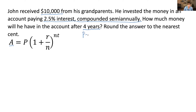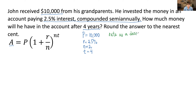Let's list what we are given. The principal P equals ten thousand dollars. The interest rate is 2.5 percent. N, the number of times the interest is compounded per year, equals two. Time t equals four years. We have to be careful because the interest rate needs to be written as a decimal. To convert 2.5 percent to a decimal, we divide 2.5 by 100 to get 0.025, or equivalently, move the decimal point two places to the left.